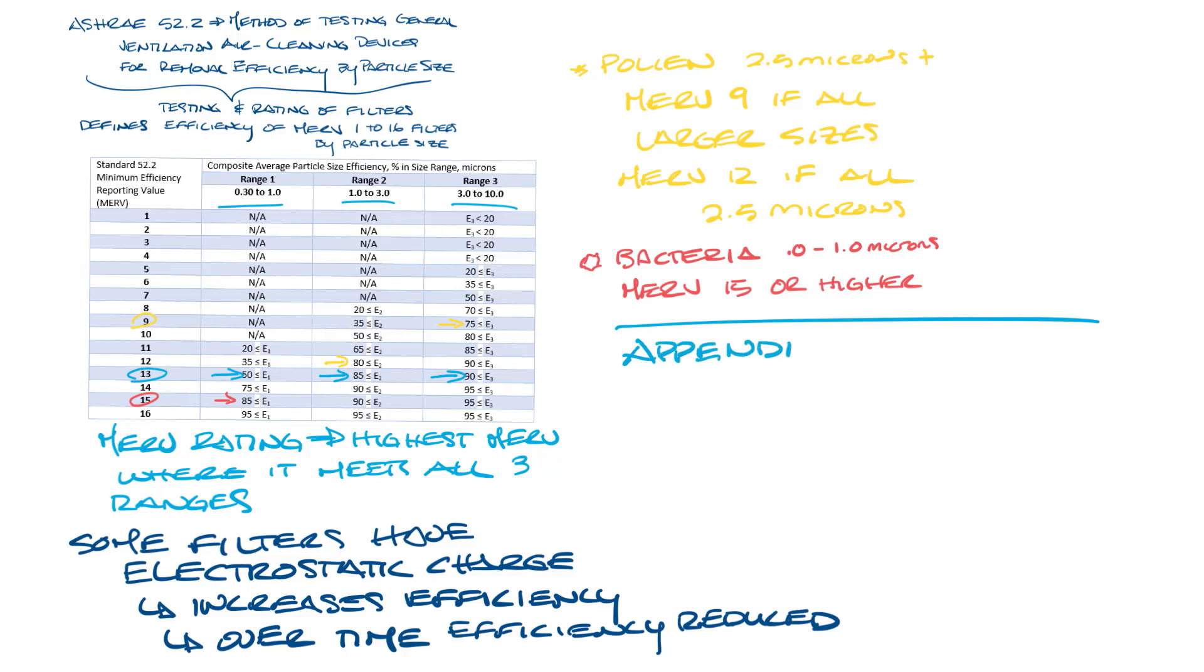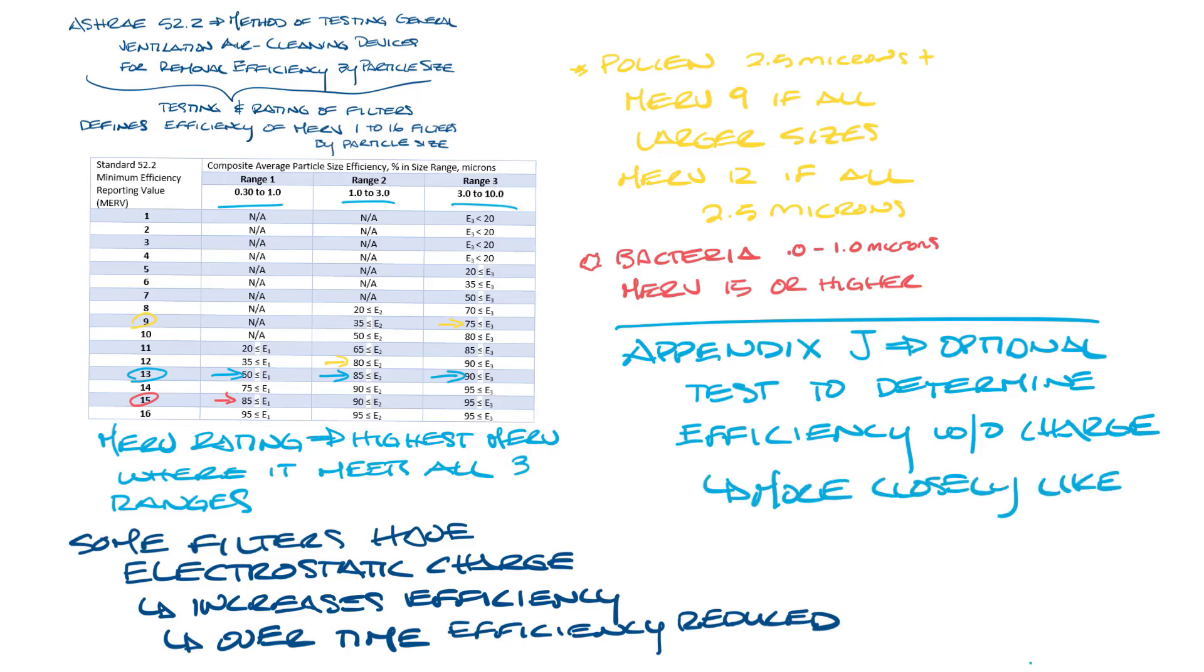ASHRAE 52.2 Appendix J has an optional test method for determining filter efficiency without electrostatic charge. The resulting values, denoted in MERV-A ratings, more closely represent the filter's efficiency in real use over time. Not all manufacturers do the Appendix J test, so you should be careful when you compare MERV ratings.